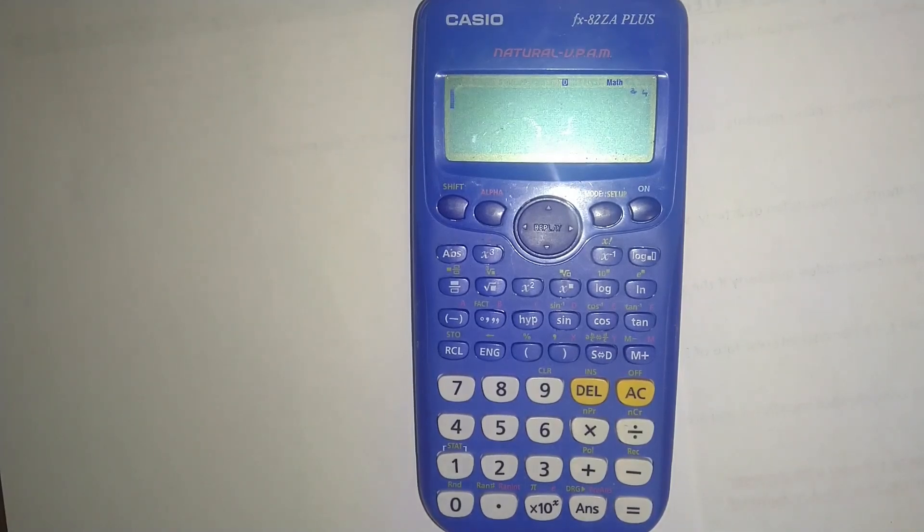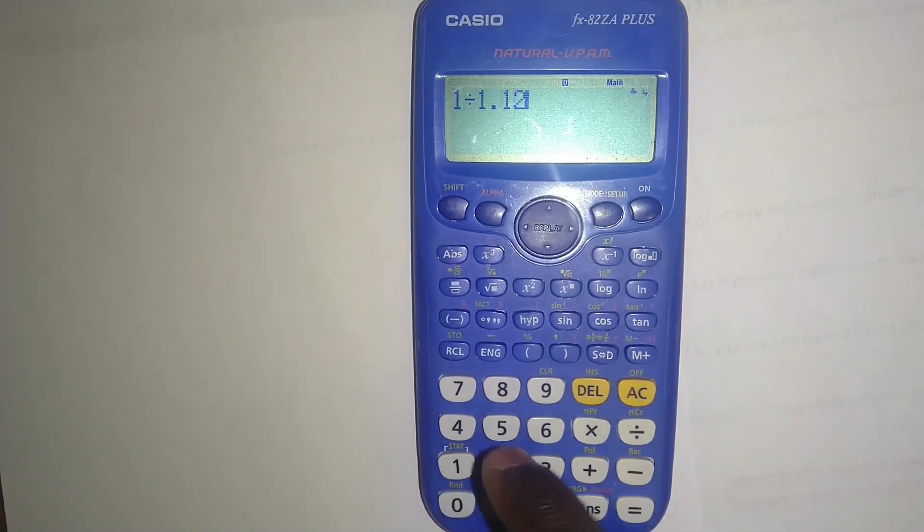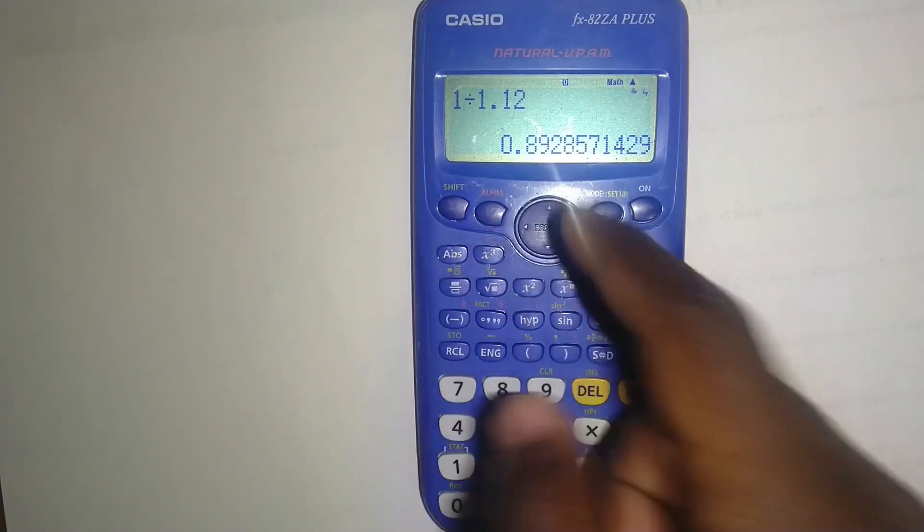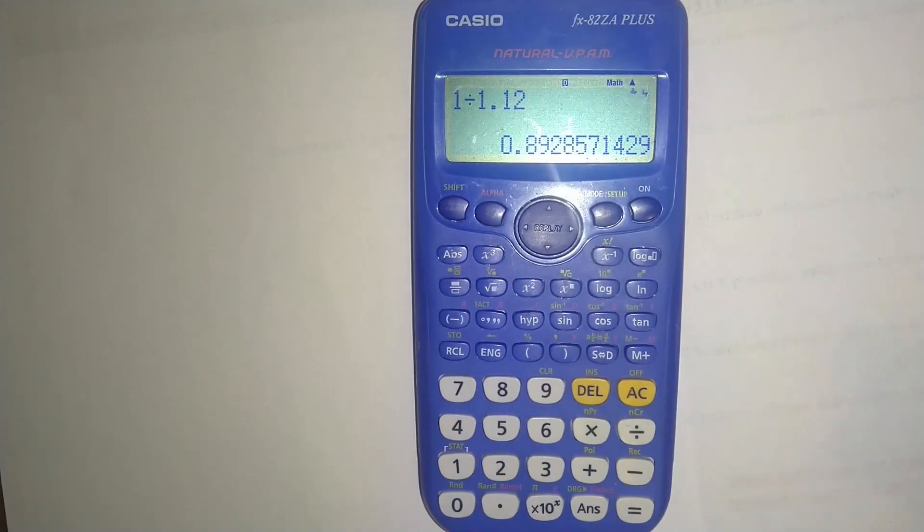Then you just take 1 divided by 1.12, because 1 plus 12% is 1.12. And then you put equals and you can see that it has given me 0.893. That is the present value factor for the first year.